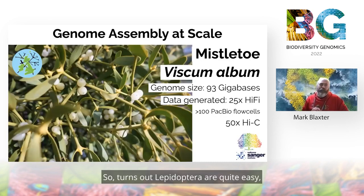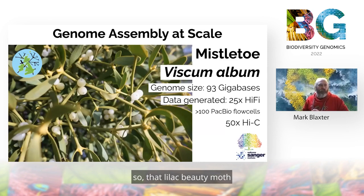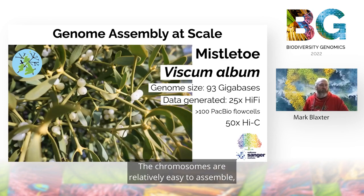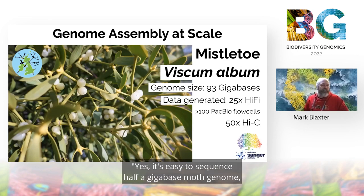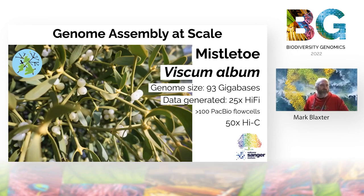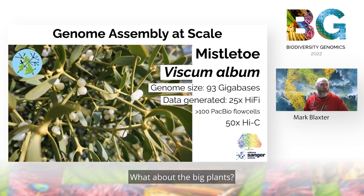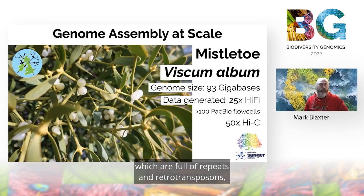Lepidoptera are quite easy — the lilac beauty moth has low levels of repeats and relatively easy-to-assemble chromosomes. So we've been challenging ourselves with slightly more difficult genomes. One question we're asked is: yes, it's easy to sequence a half-gigabase moth genome, but what about plants? What about the big plants with giant genomes full of repeats and retrotransposons and maybe polyploid?